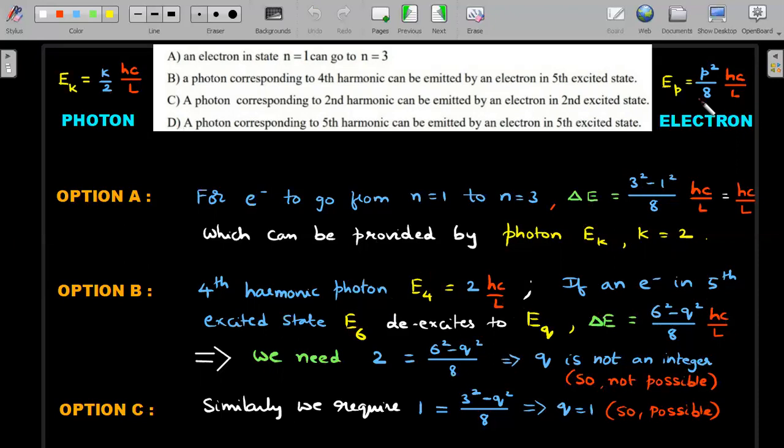If an electron in fifth excited state, this is important language, fifth excited state is the sixth energy state, so you're talking about E6. It needs to de-excite to some qth harmonic form. The delta E required is 6 squared minus q squared divided by 8 times hc by L. This should match with the photon that would be emitted. If q is not an integer, then the statement is not possible, so option B is not possible.